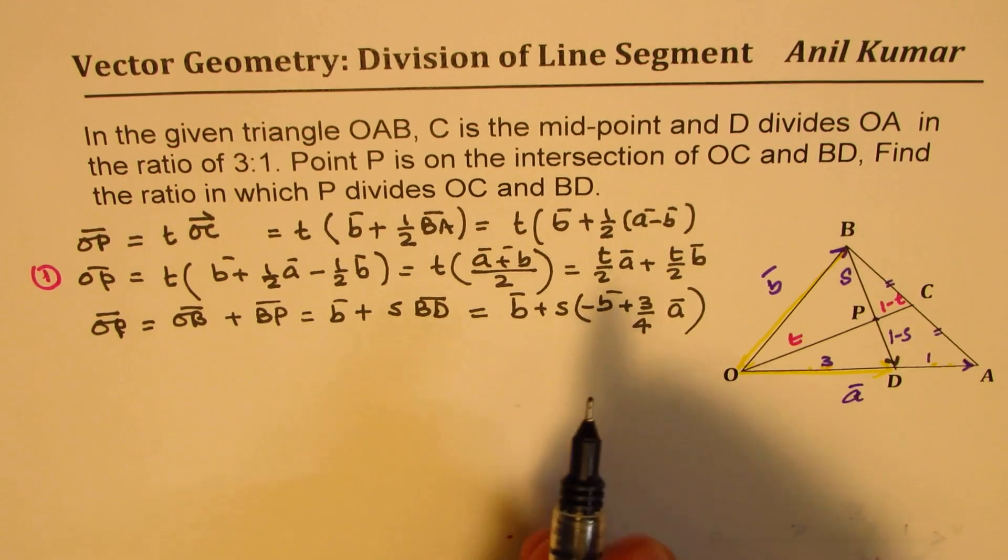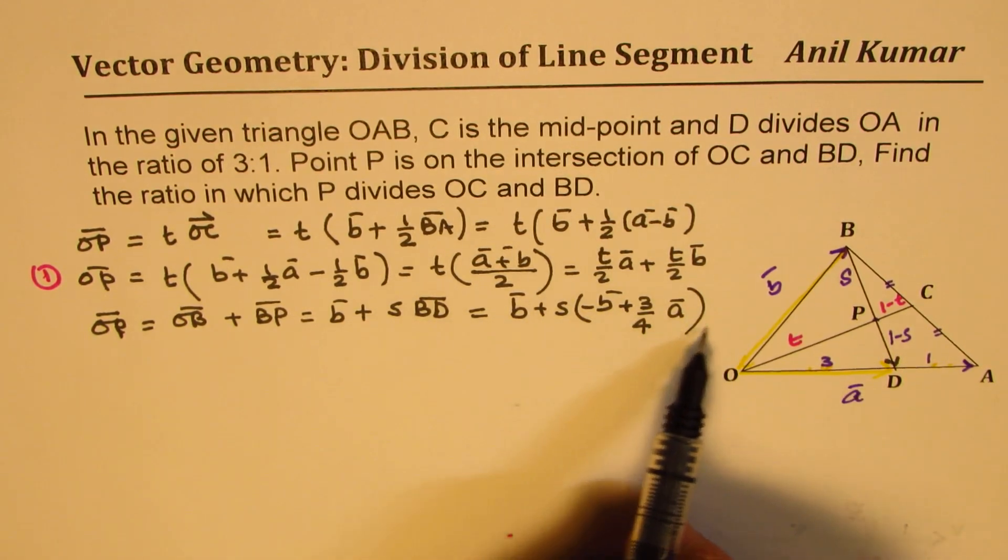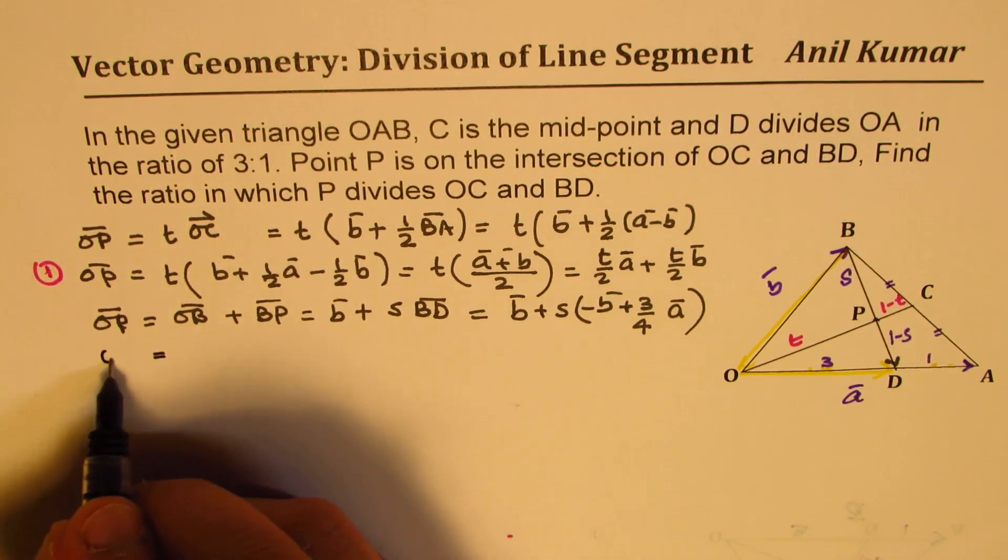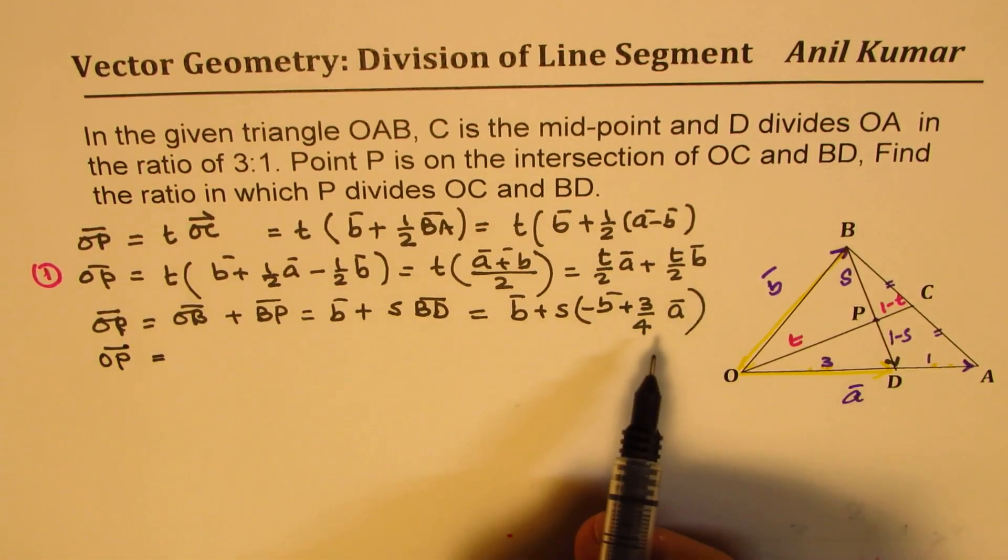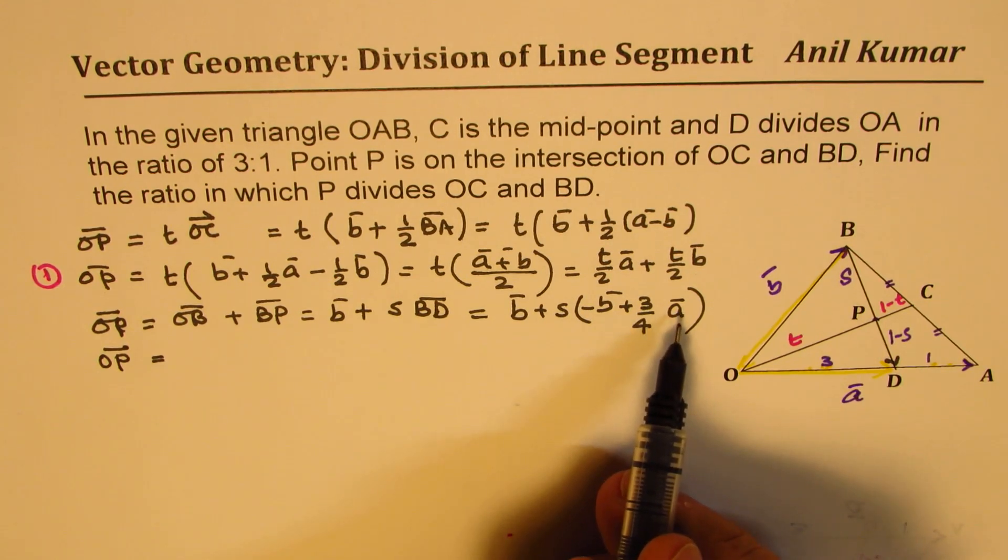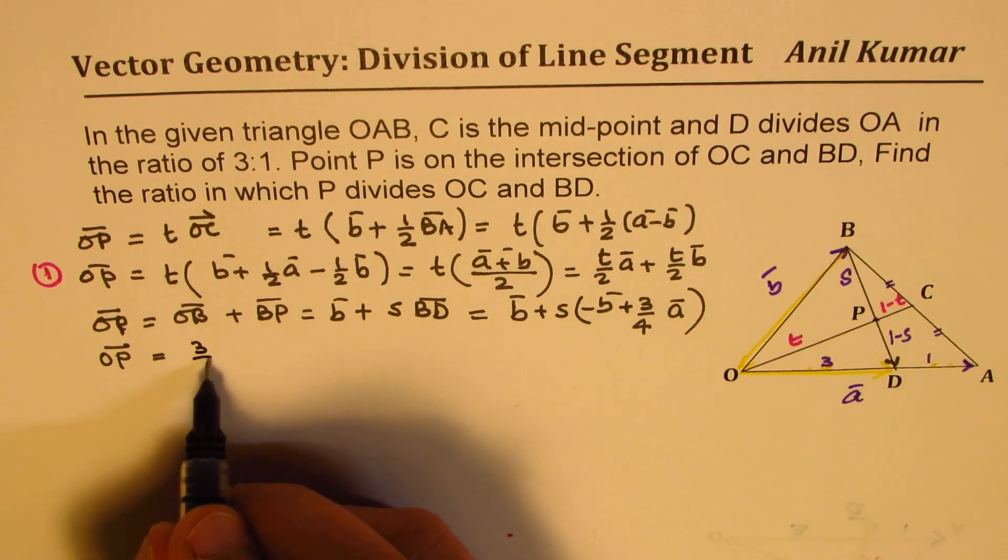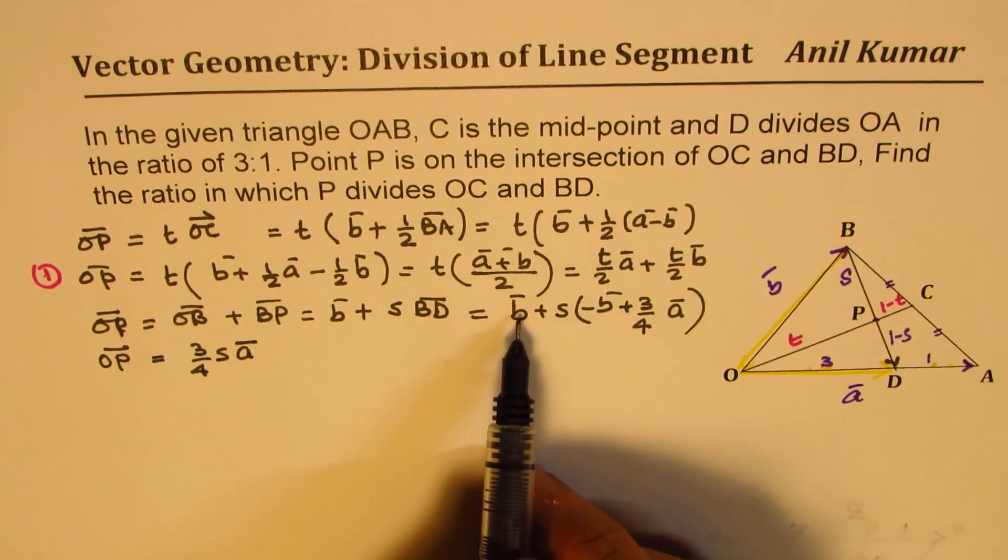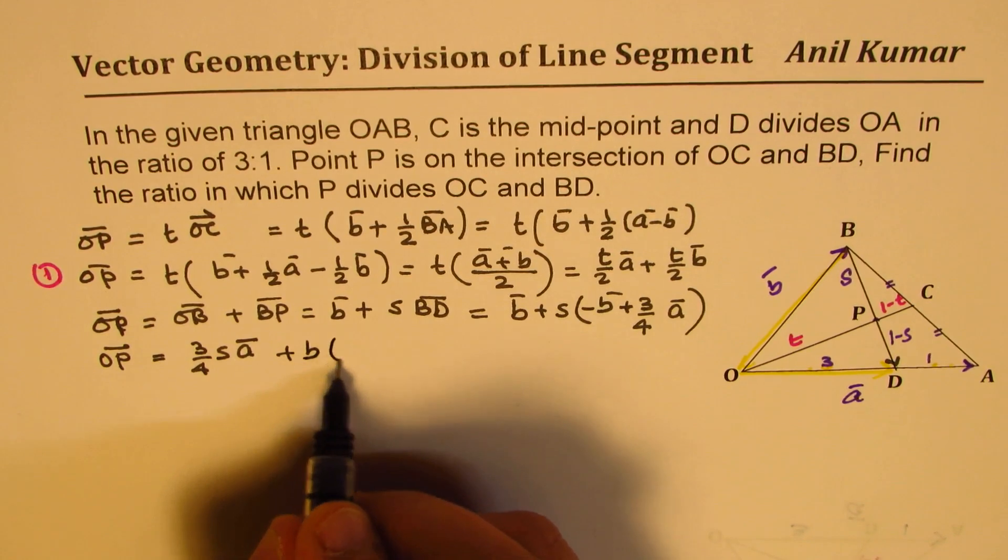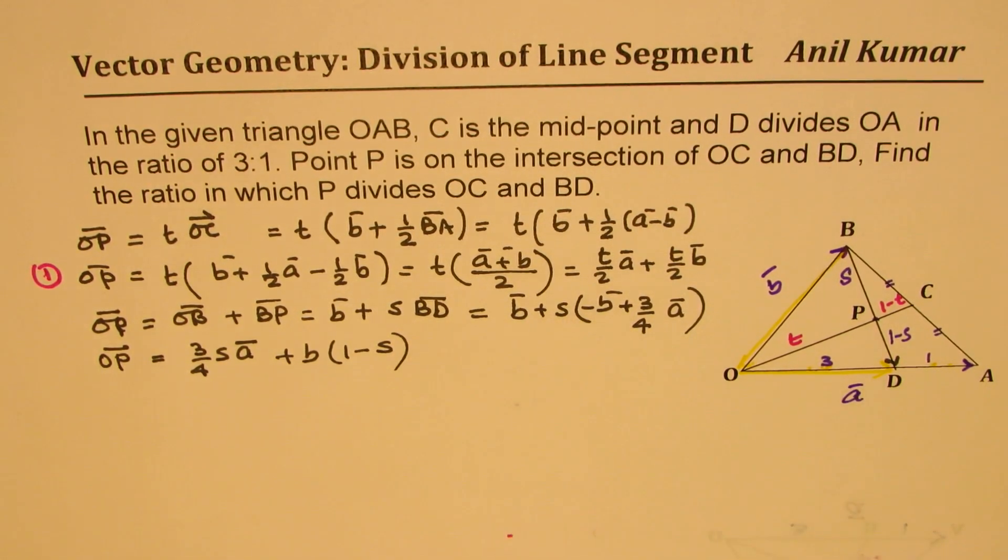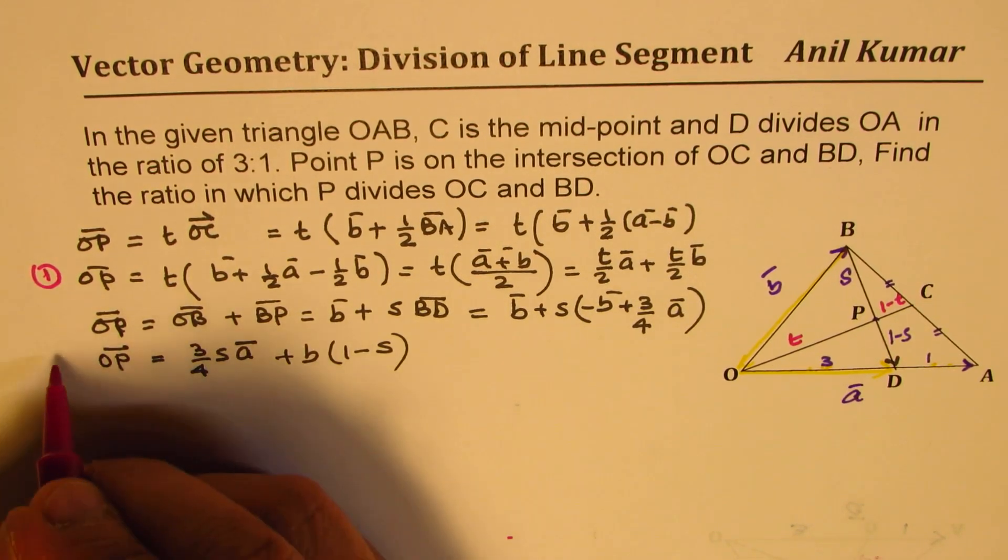Now, let us simplify this one and isolate A and B, just as we did that. So, we can now write OP as S times 3 over 4A. So, we can write 3 over 4, S times vector A. As far as B is concerned, we can take B common 1 minus S. So, that is how we can write this vector. So, we will call this as our equation number 2.